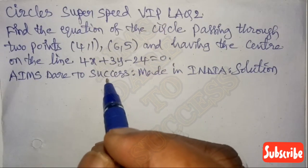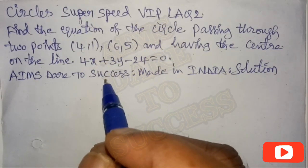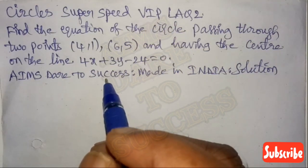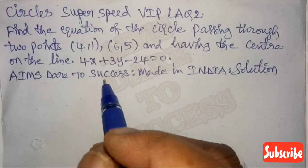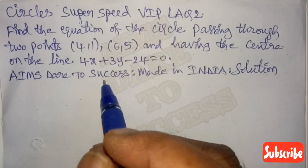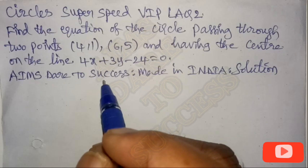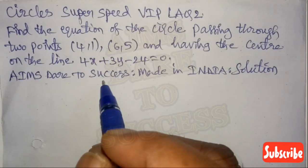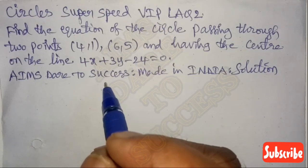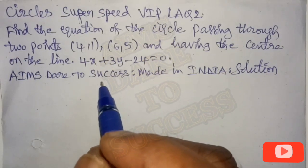Today we are discussing about circles, super speed VIP long answer question. Find the equation of the circle passing through two points (4,1) and (6,5), and having the center on the line 4x + 3y - 24 = 0.